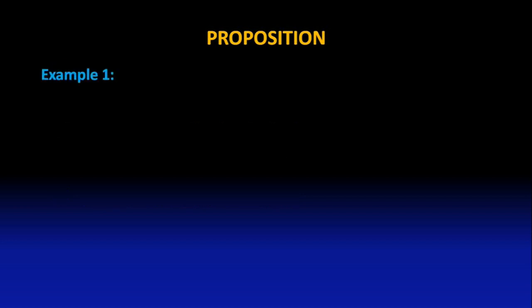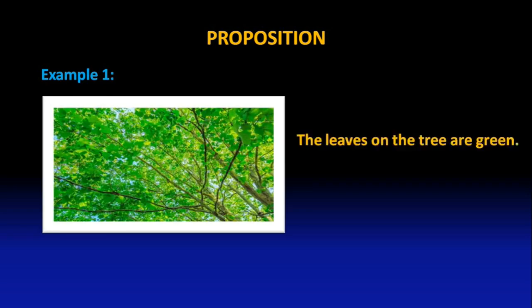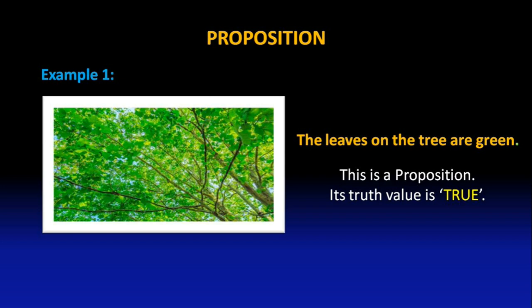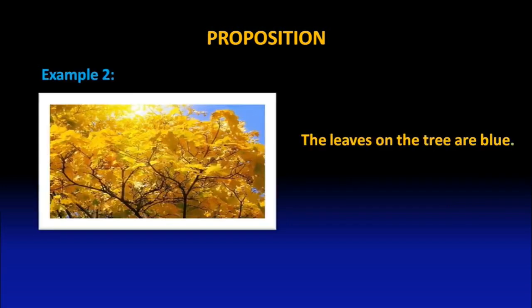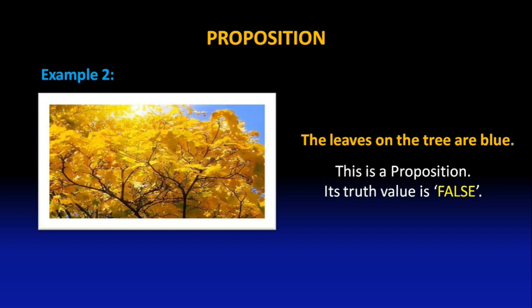Let us take a few examples to understand propositions. 'The leaves on the tree are green.' This is a proposition and its truth value is true because the leaves on the tree are green. 'The leaves on the tree are blue.' This is also a proposition, but its truth value is false because the leaves on the tree are not blue.